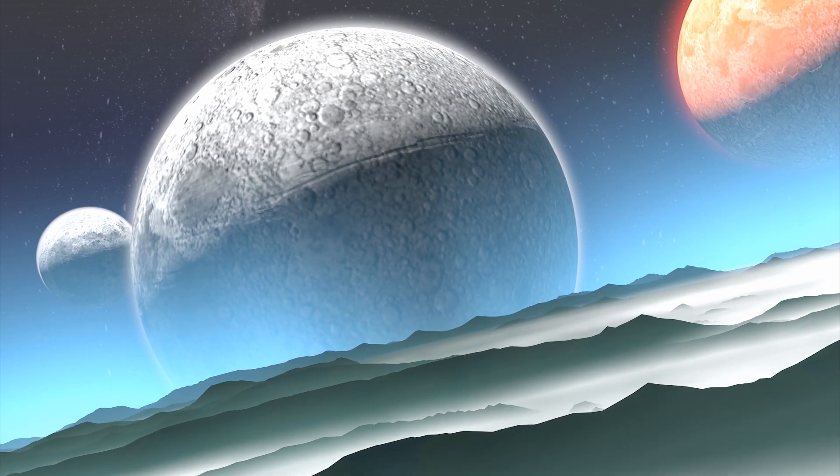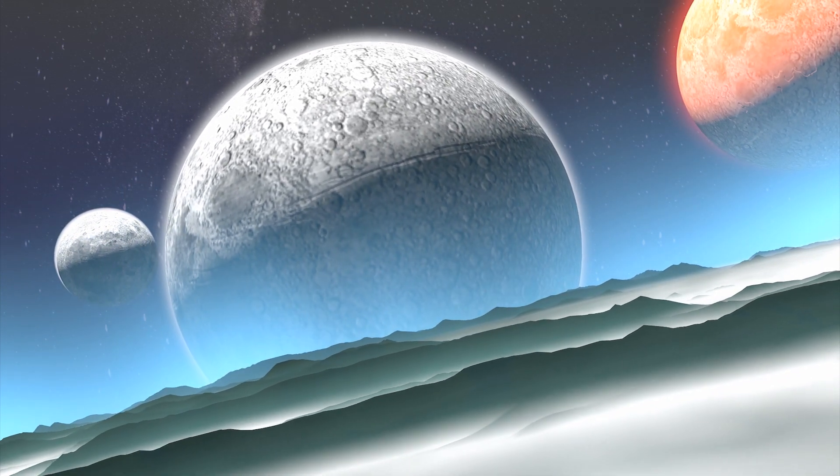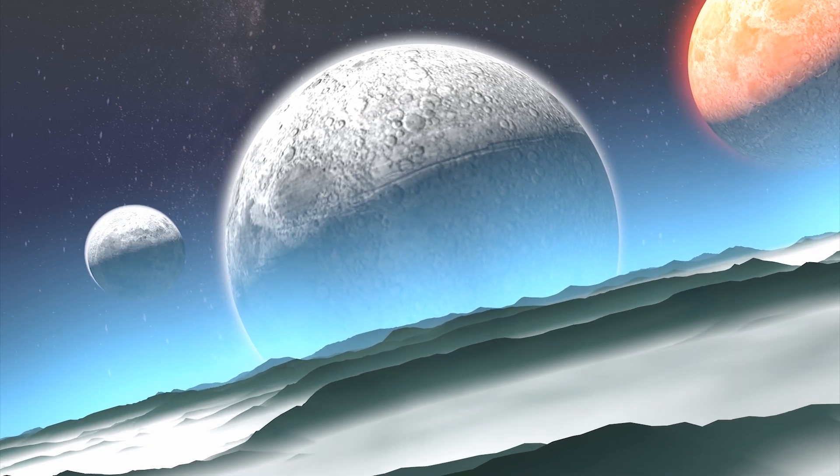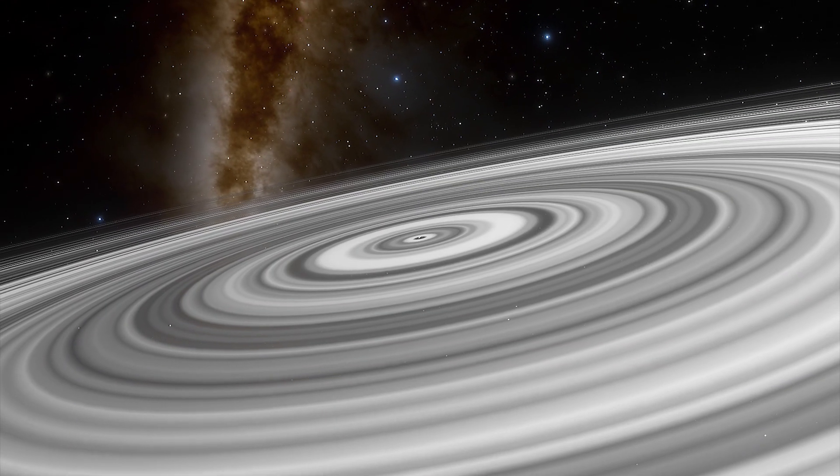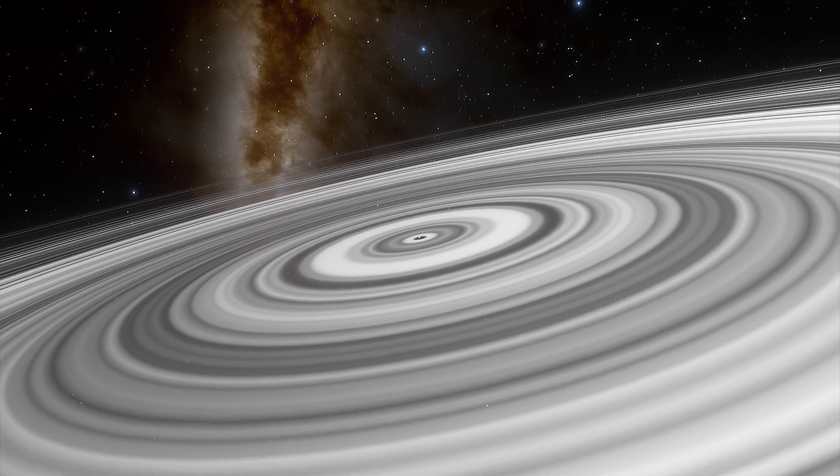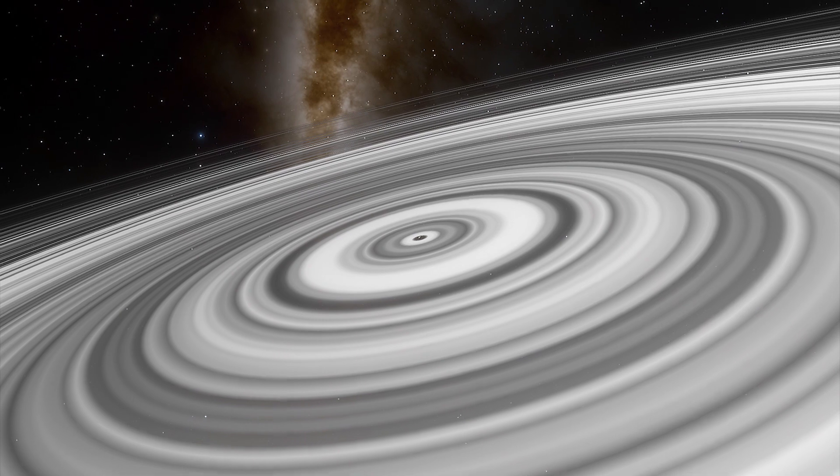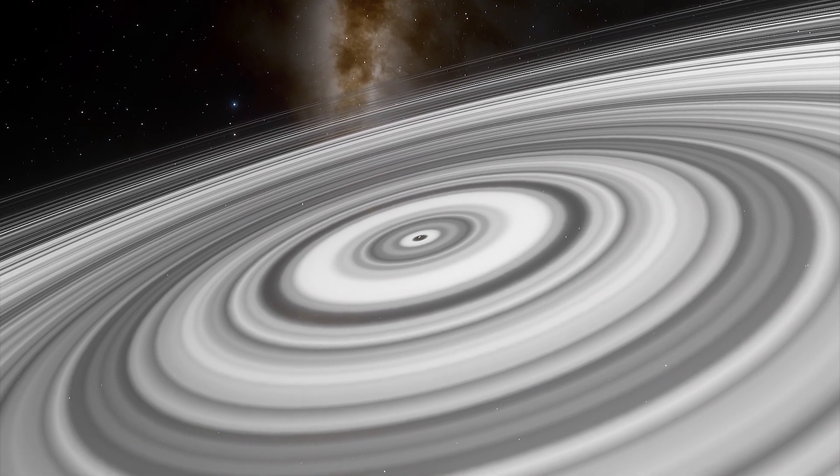Earth-sized exomoons might prove to be promising homes for habitable life, even though none have shown up yet. But the case of J1407b has potential and may shed light on both exomoons and exorings.